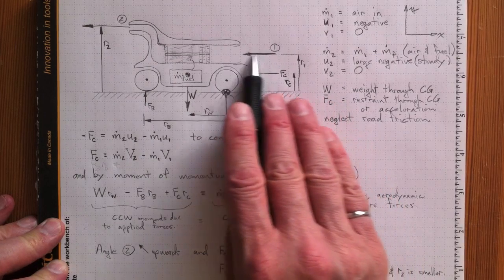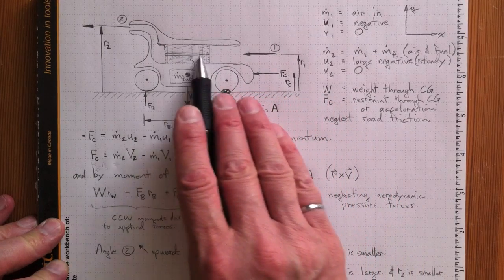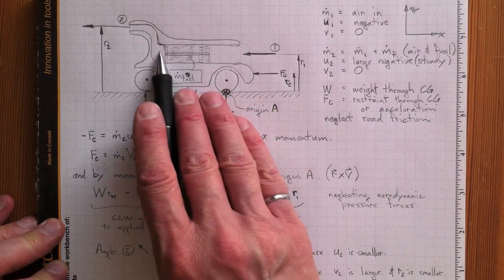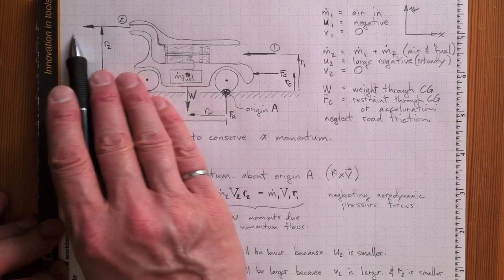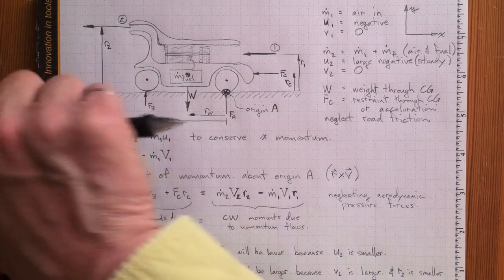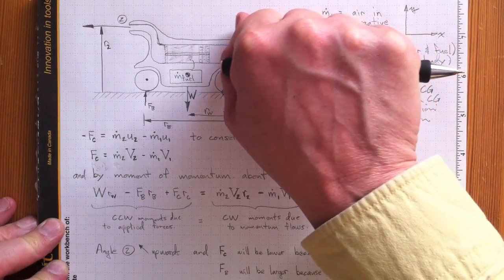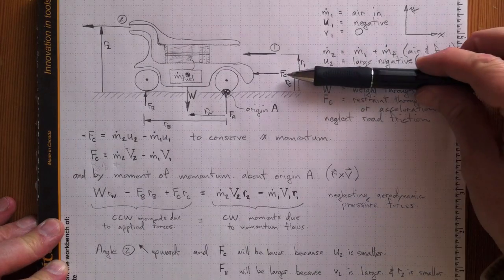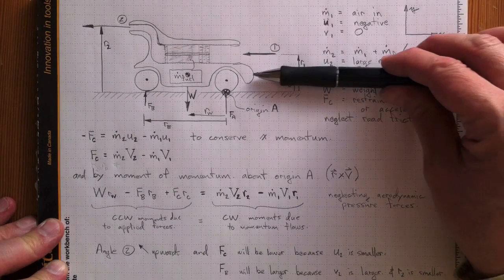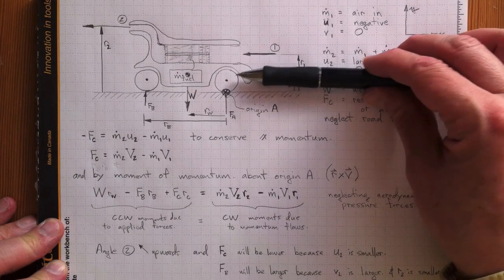It takes air in from the front, runs it through a gas turbine, and spits it out going much faster out the back. This generates a thrust pushing the car this way, so there's got to be a restraining force, Fc, pushing on the front to hold it back.